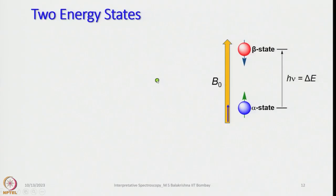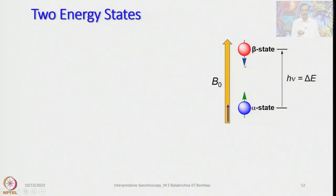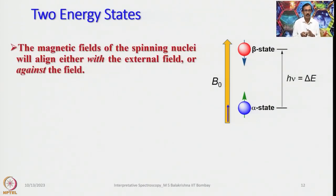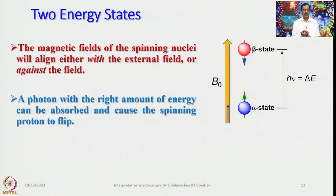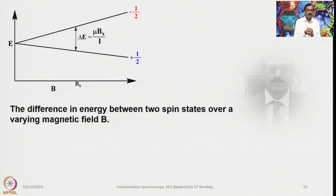The two energy states are called the alpha state and beta state. The magnetic fields of spinning nuclei align either with or against the external field, and a photon with the right energy causes the spinning nucleus to flip — in the range of radio frequency. Energy increases with the magnetic field, so with increased field strength the spacing between the two states also increases.